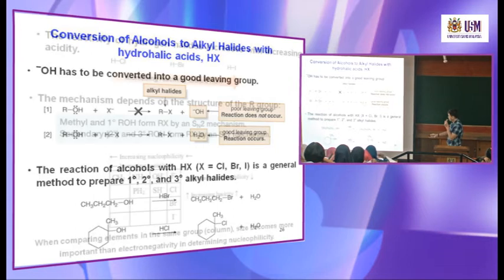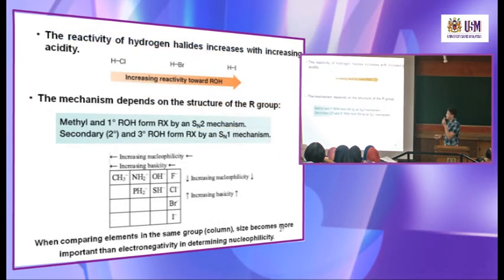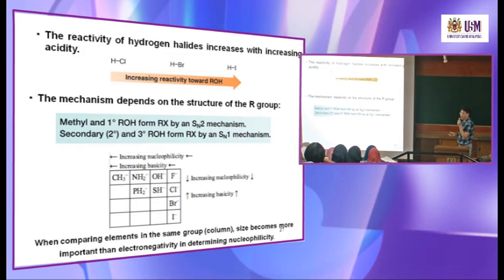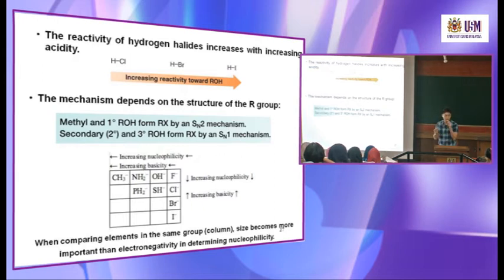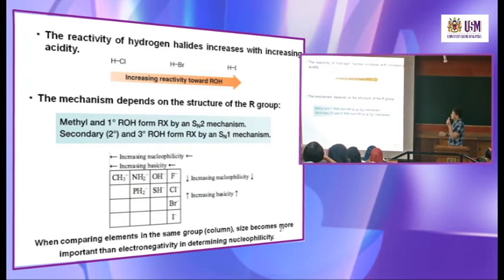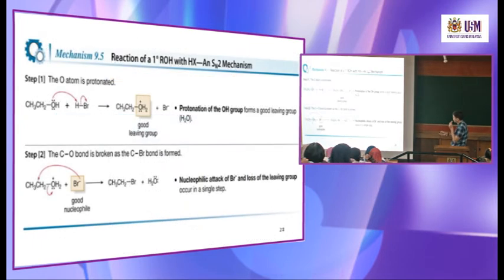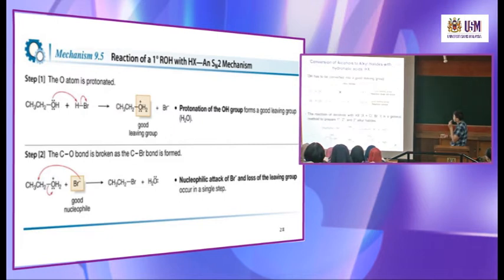The reactivity of hydrogen halide increases with increasing acidity. HI is the most acidic because the iodide is a better leaving group and the weakest base — when you have a very weak conjugate base, the acid is stronger. So HI is the most reactive acid compared to HBr and HCl. That's why reactions with HBr are common, but with HCl you need zinc chloride as a catalyst.